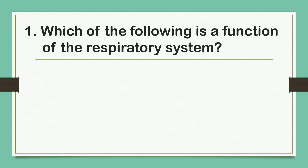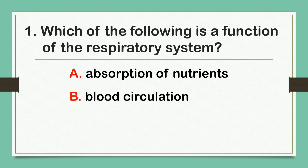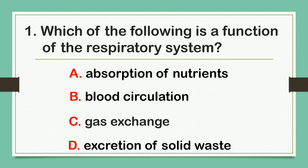Which of the following is a function of the respiratory system? A. Absorption of nutrients. B. Blood circulation. C. Gas exchange. Or letter D. Excretion of solid waste. The correct answer is letter C: Gas exchange.